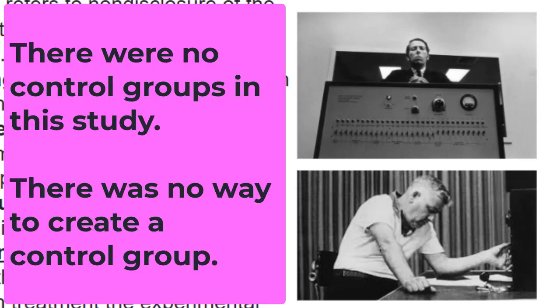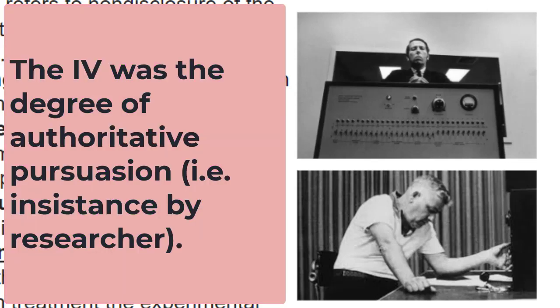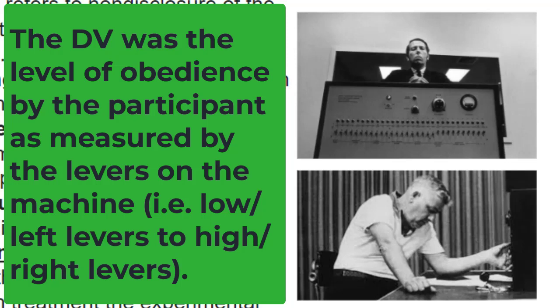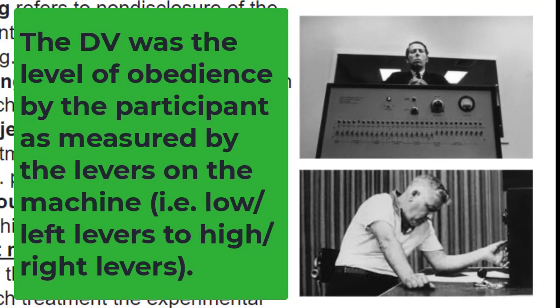In Milgram's experiment, there was no control. The independent variable was the instructions and persuasion of the researchers urging the participant to shock the person who made mistakes on the memory test. The dependent variable was how much the participants obeyed the authoritarian voice urging them to continue shocking. To quantify this, researchers used the lever positions to describe how much obedience the participant had provided.